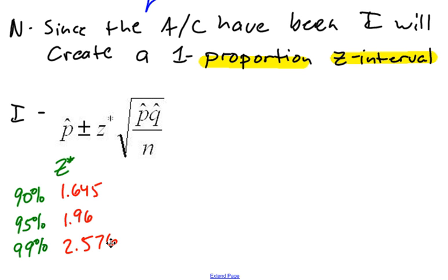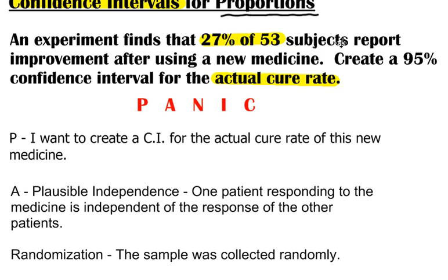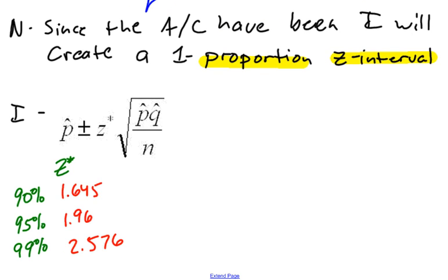Now, you've got to be careful because these critical values are true for a Z interval. If I'm using a normal model, if for some reason I'm finding a confidence interval for means, this Z is going to turn into a T and we use a different kind of distribution. So in this case, I think in the original question up here at the top, it said create a 95% confidence interval. And since I'm working with a Z interval at this point, I am going to use a critical value of 1.96.